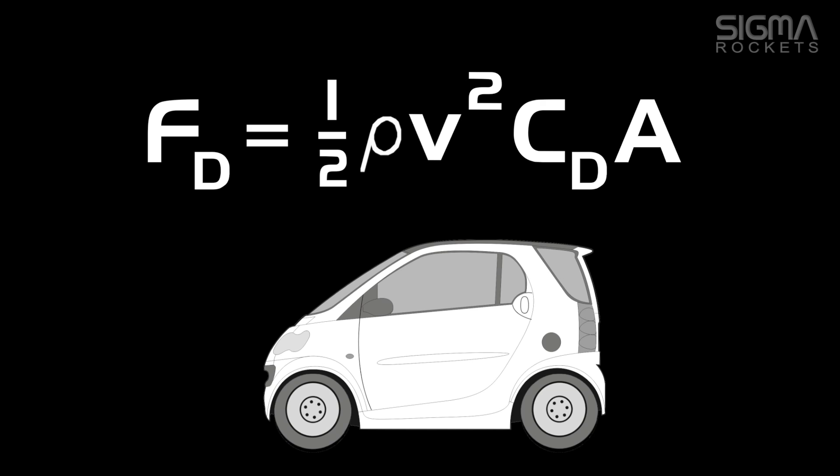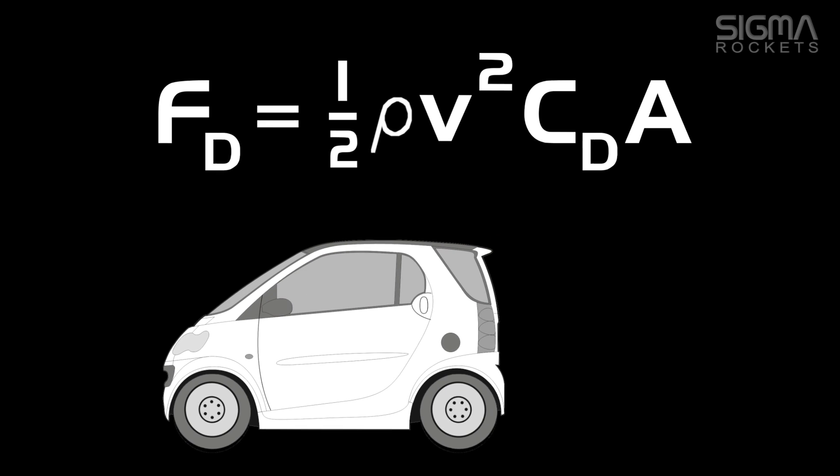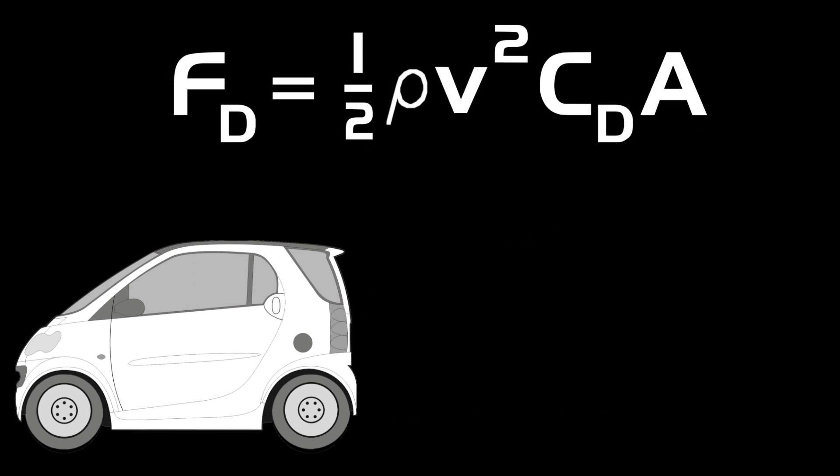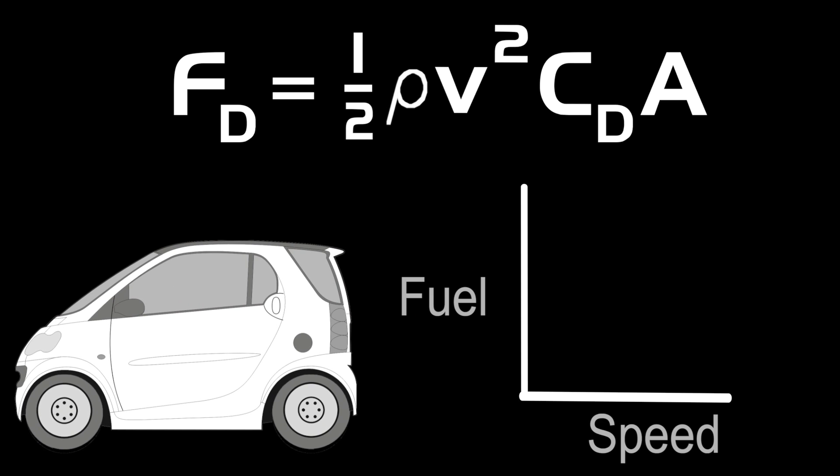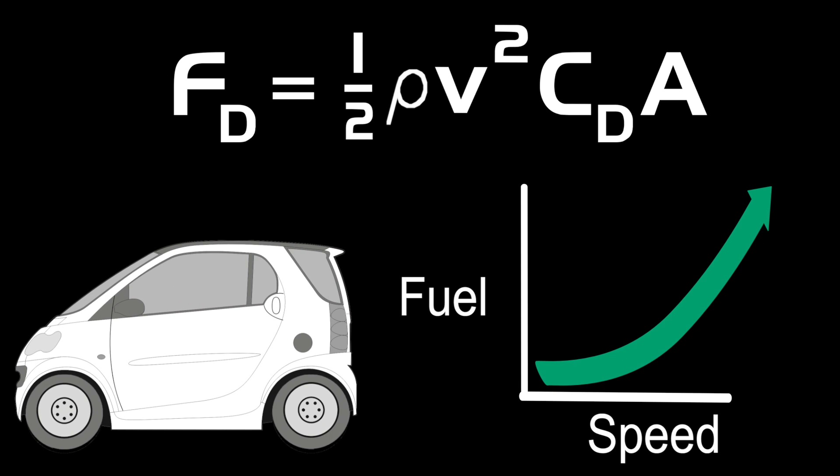Thus, as the speed at which you drive down the highway increases, the energy needed increases exponentially. So more fuel is used as the car goes faster.